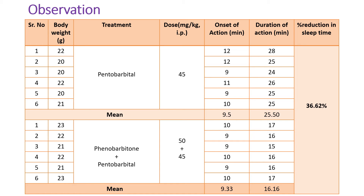Now we will see the observations. Group 1 comprises 6 animals and Group 2 also consists of 6 animals. Group 1 is the pentobarbital-treated group, whereas Group 2 is the phenobarbital plus pentobarbital treated group. In Group 1, the onset of action is around 12, 12, 9, 11, 9, and 10 minutes. When we calculate the mean, it comes to 9.5 minutes.